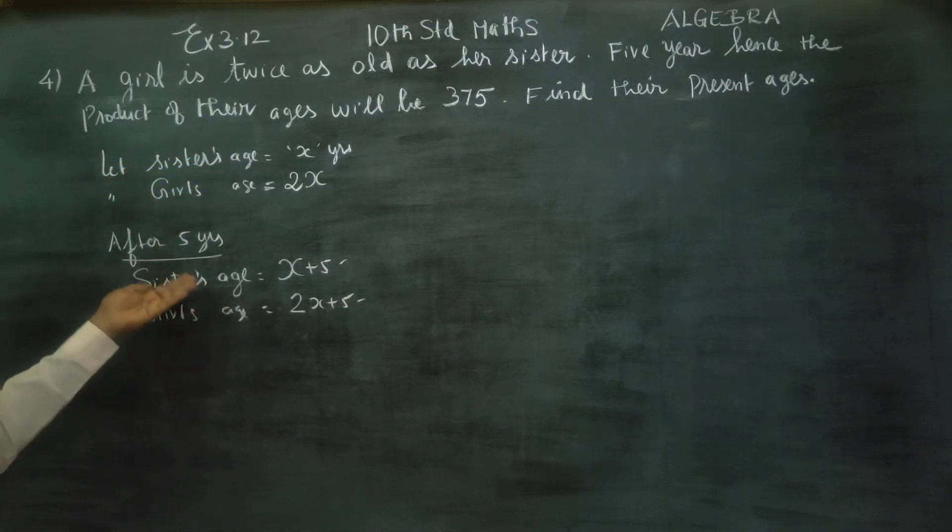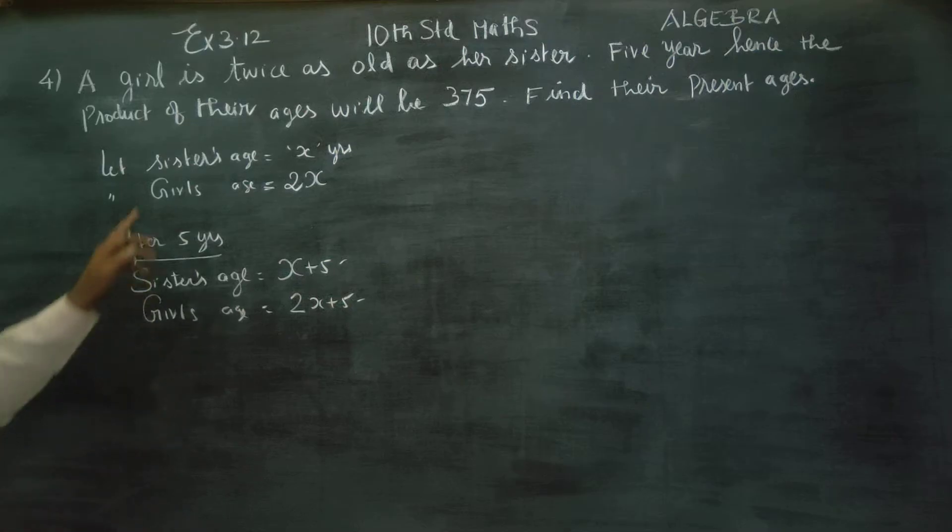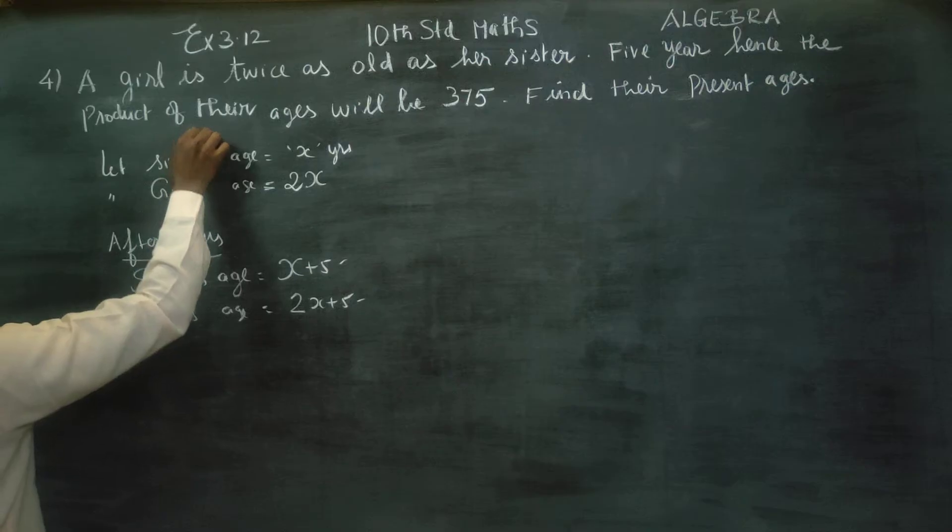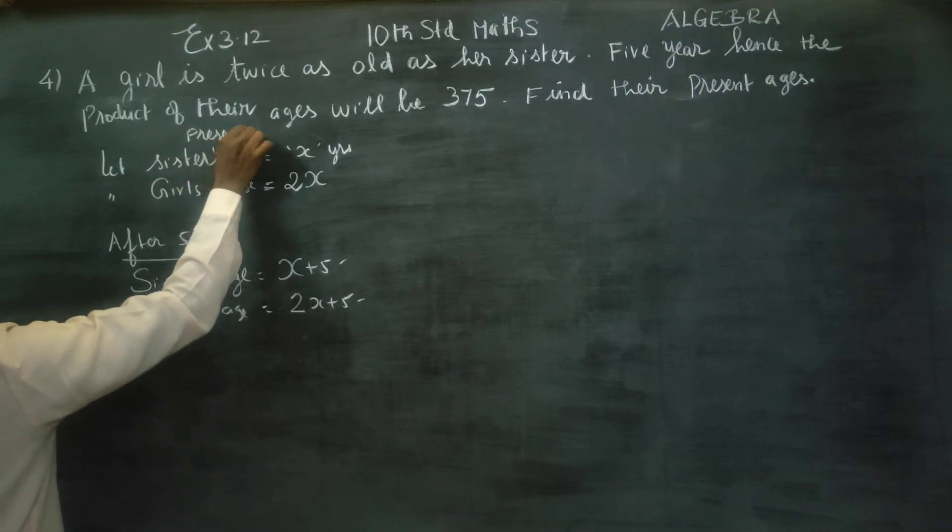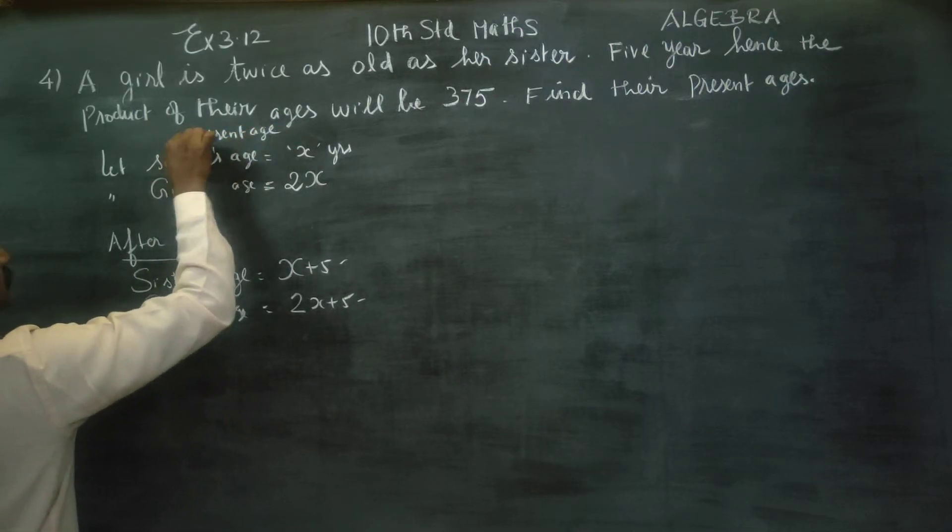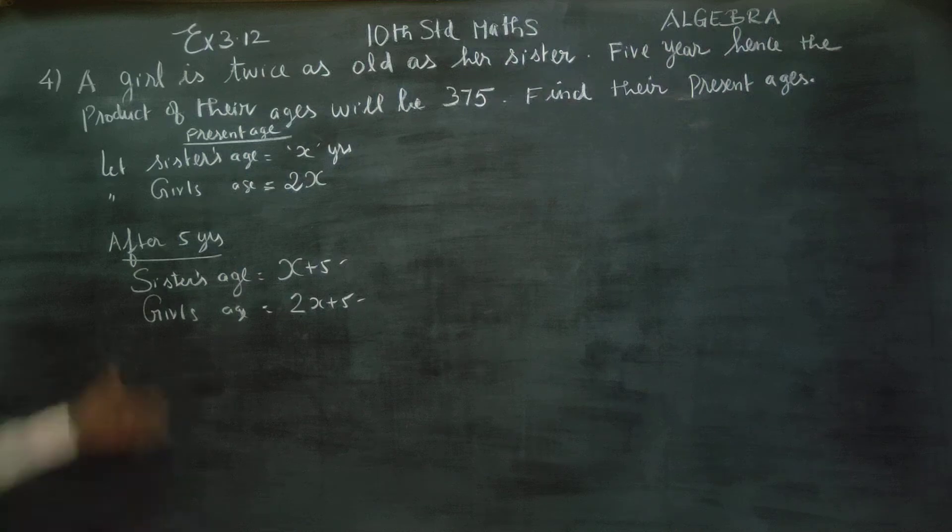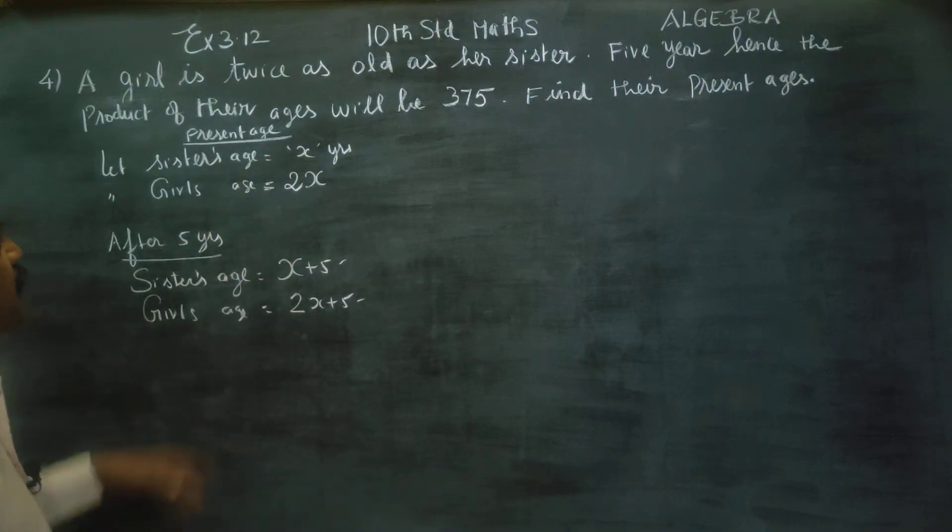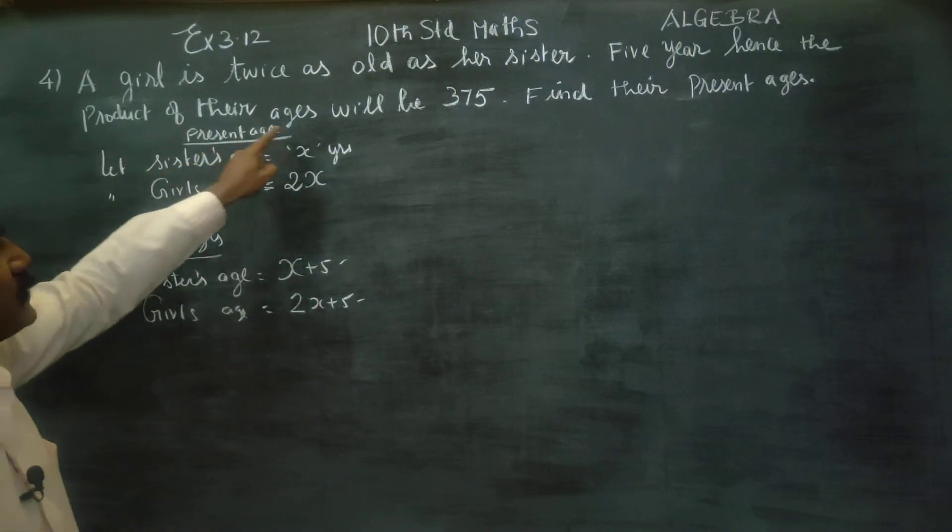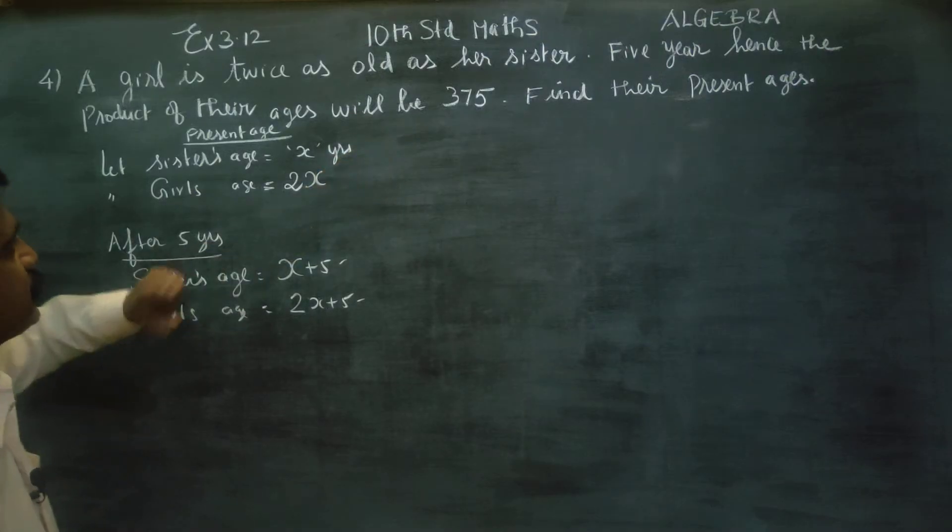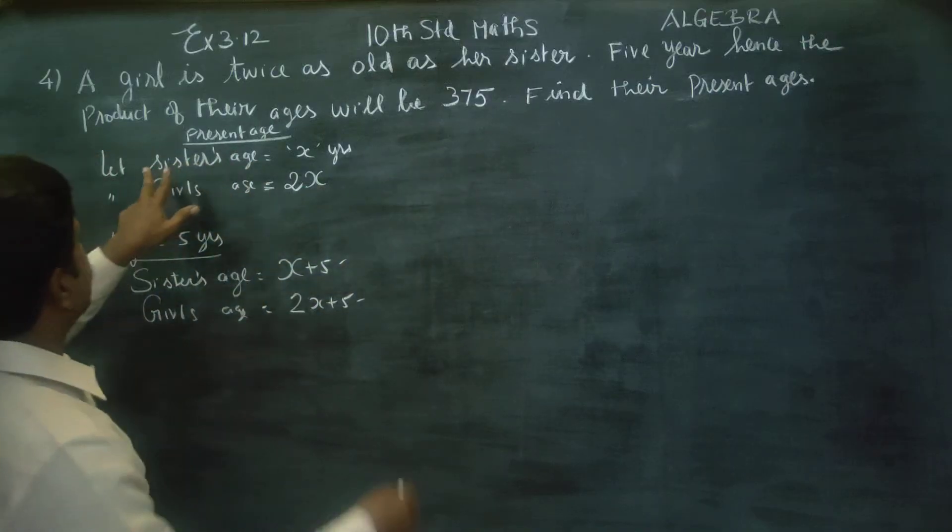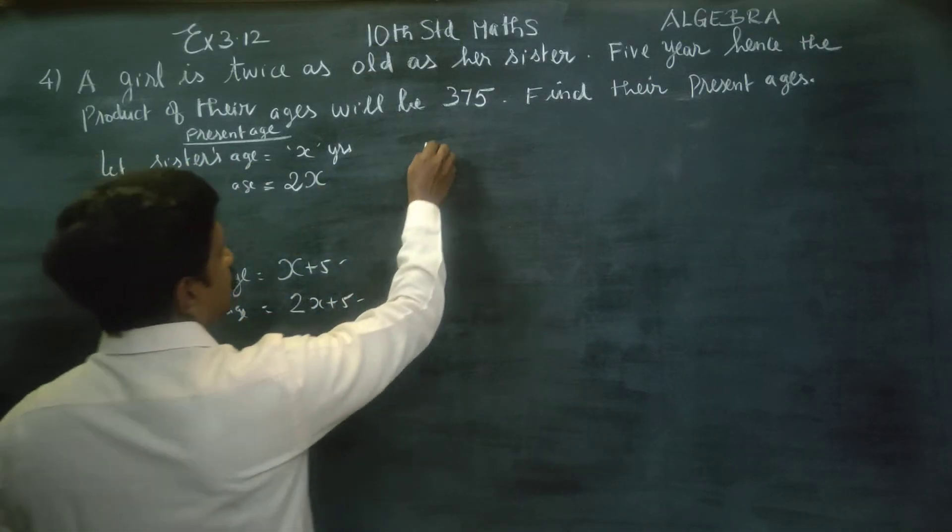After 5 years, let sister's age is equal to x plus 5. Girl's age is equal to 2x plus 5. Present age, this is after 5 years. Find their present age.